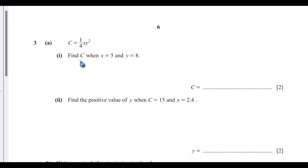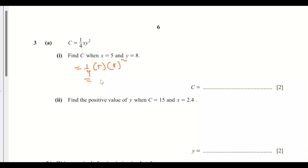Question 3A: c equals one over four x y squared. Find the value of c when x equals 5 and y equals 8. So that would be c equals one over four, x equals 5, y equals 8 squared. This gives one over four multiplied by 5 multiplied by 64. Four into 64 is 16, so 5 multiplied by 16 equals 80.